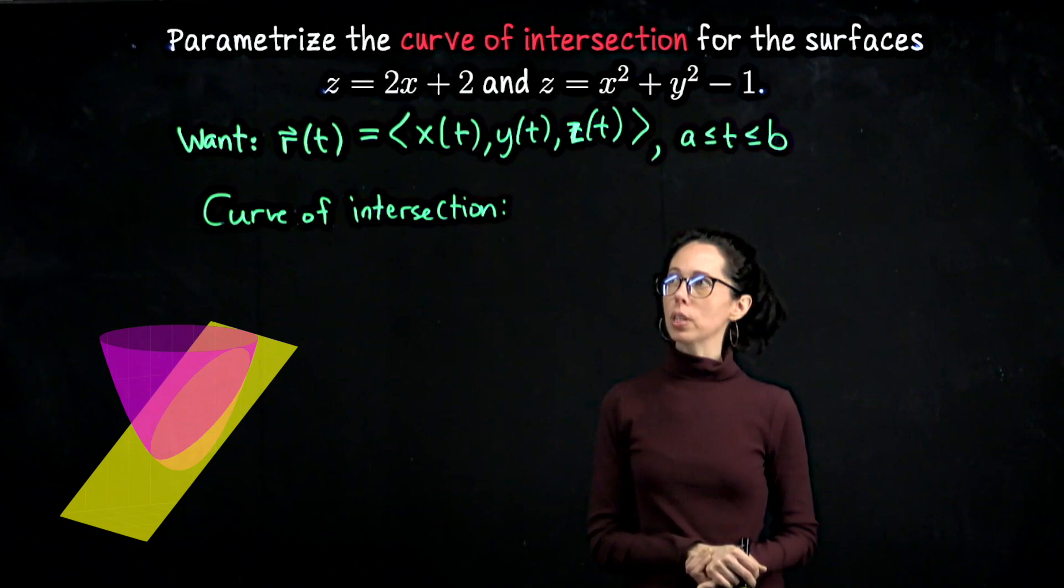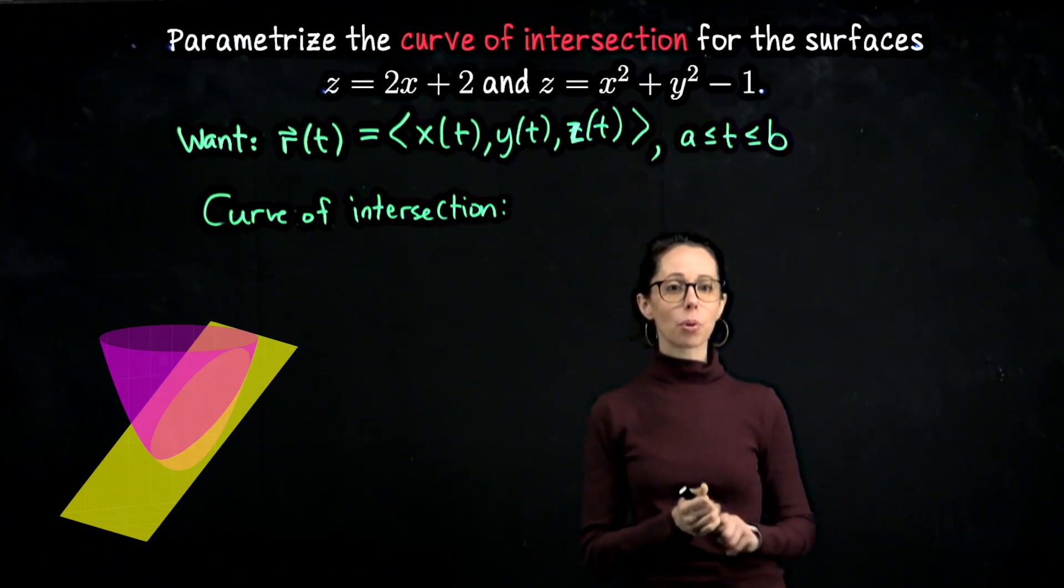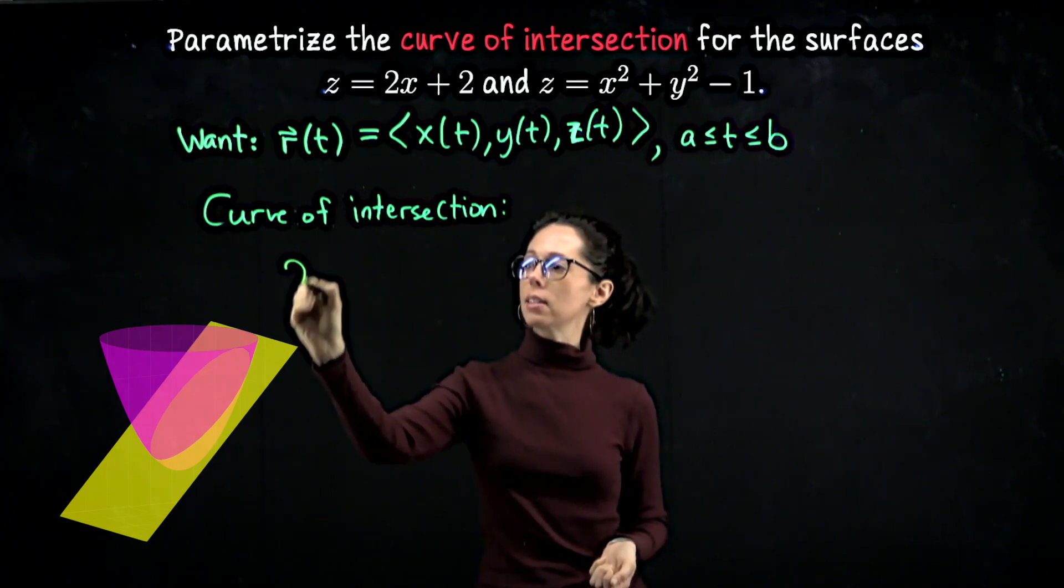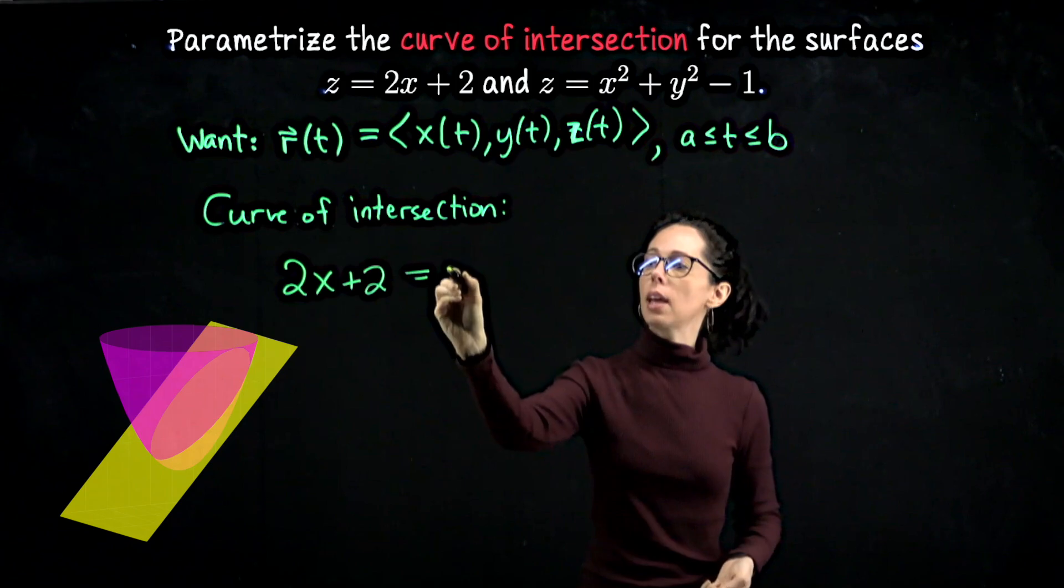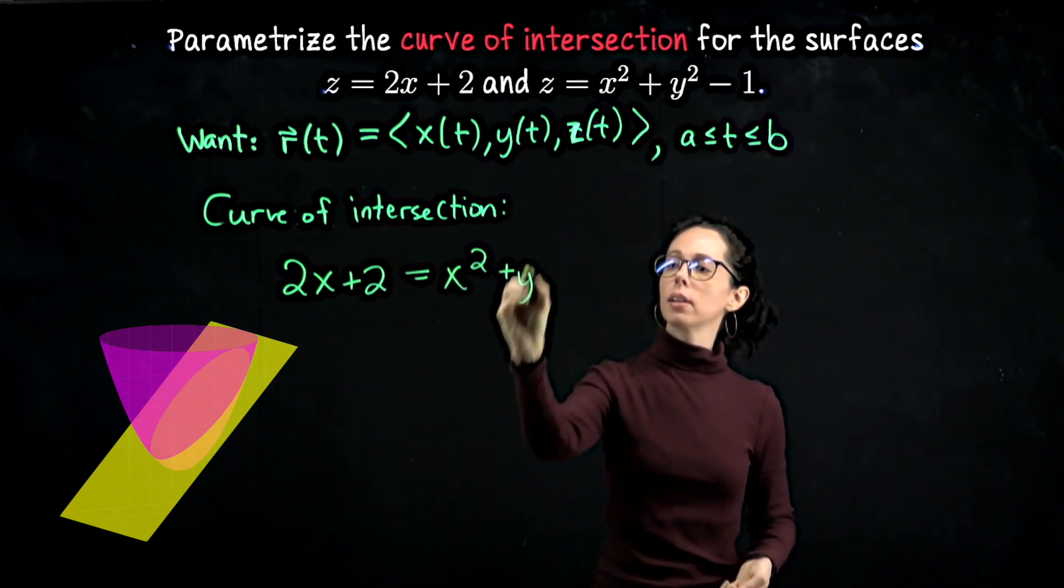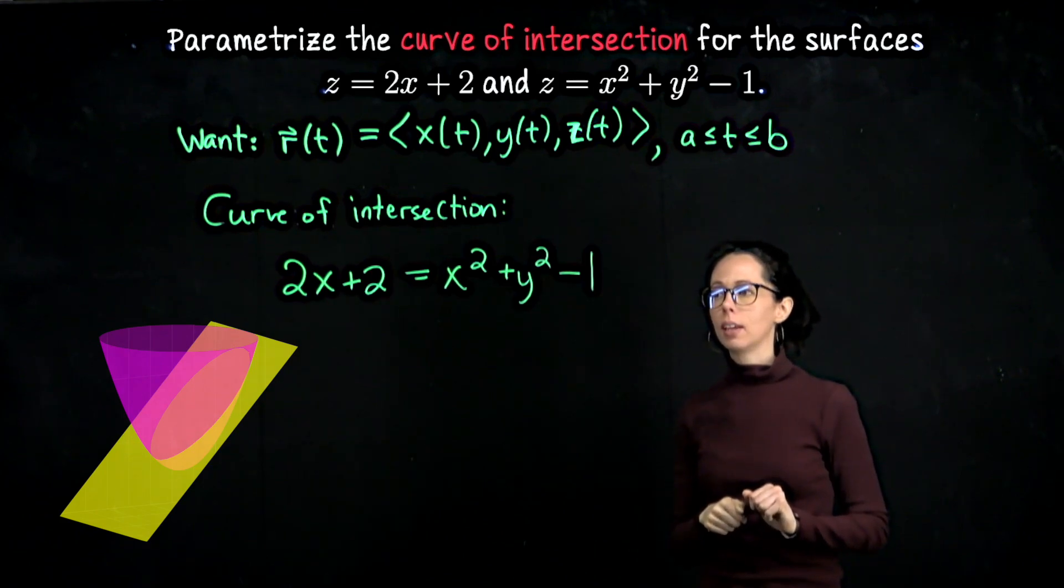What we can do is substitute 2x plus 2 from the plane equation into z for the paraboloid equation to say that 2x plus 2 equals z, which equals x squared plus y squared minus 1.